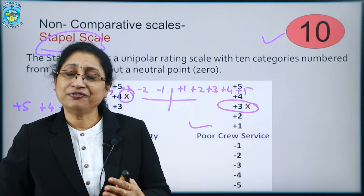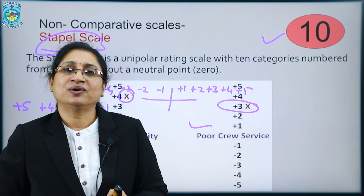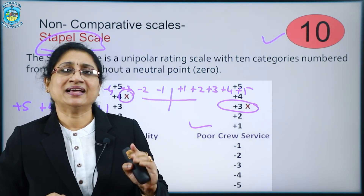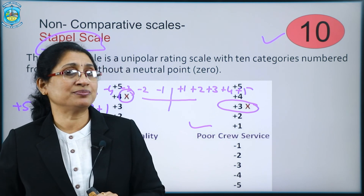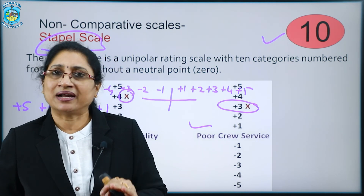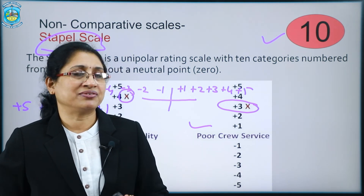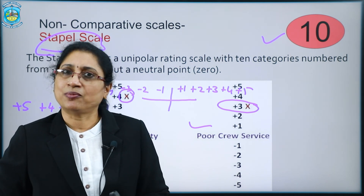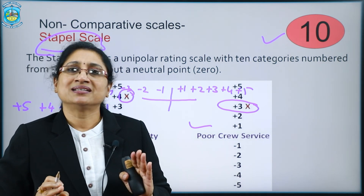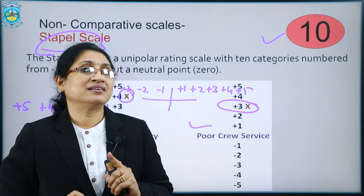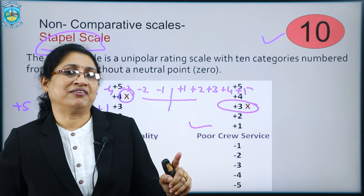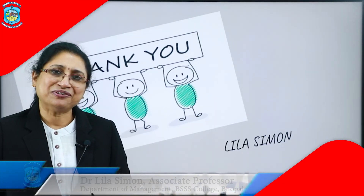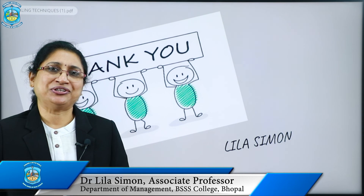To review: the Likert scale has five points and has a neutral point. The semantic differential scale has seven points and also has a neutral point. The staple scale has ten points, but does not have a neutral point. That was all for this module.